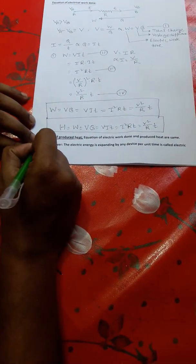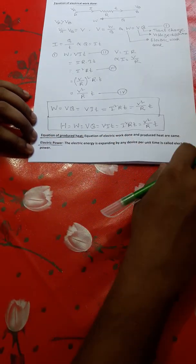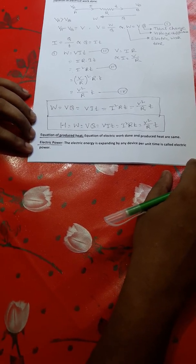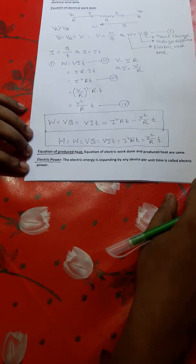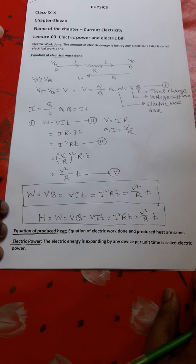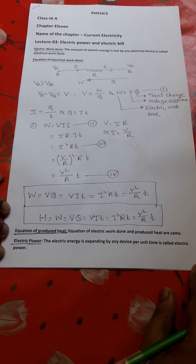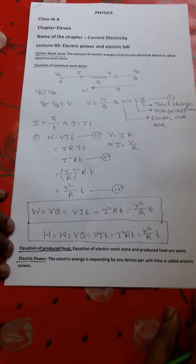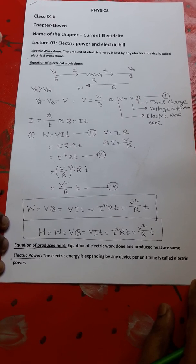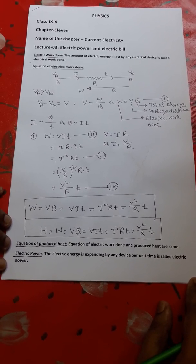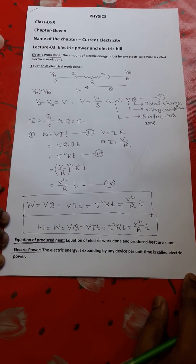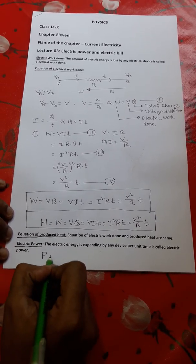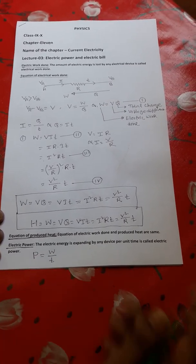Now I'm going to start the main topic of my lecture: electrical power. Boys and girls, power equals work done divided by time, or work done per unit time. In the case of electricity, electric energy expanded or lost by any device per unit time is called electric power, denoted by P. So P equals W divided by T.